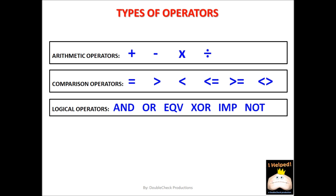Next are comparison operators. These are what we use to define relationships between two objects. We're familiar with the equal sign, and we also have greater than, less than, greater than or equal to, and less than or equal to.